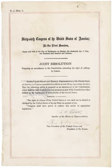Amendments may be proposed either by the Congress with a two-thirds vote in both the House of Representatives and the Senate, or by a convention of states called for by two-thirds of the state legislatures. To become part of the Constitution, an amendment must be ratified by either, as determined by Congress, the legislatures of three-quarters of the states or state-ratifying conventions in three-quarters of the states.